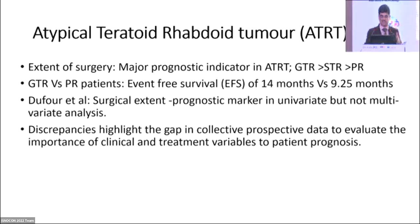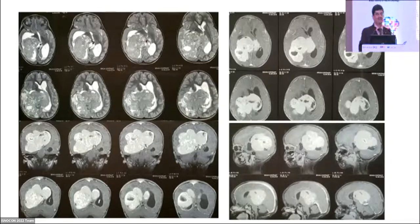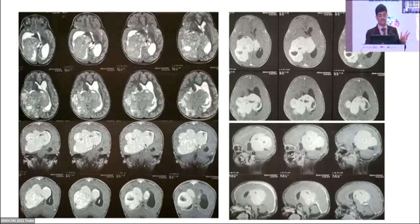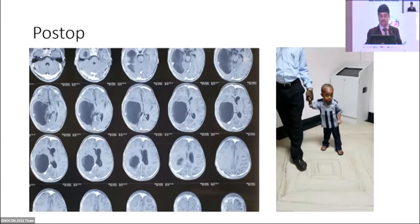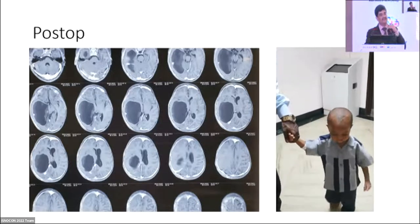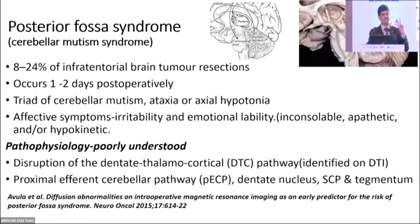A one-and-a-half-year-old child from an African country was referred to us, deteriorating in the ER with dilated pupils. We placed an EVD, intubated, and when the child showed motor movements we proceeded to surgery. This one-and-a-half-year-old had very large disease occupying the ventricles bilaterally, but we achieved gross total excision. The child made a reasonably good recovery, seen two weeks later. We lost follow-up when they returned to Africa after about one and a half years.